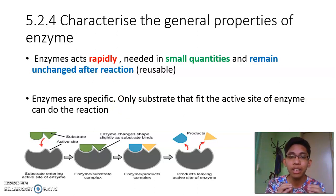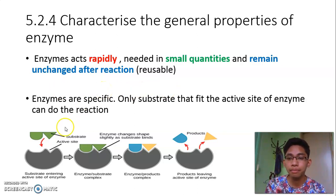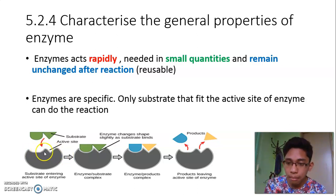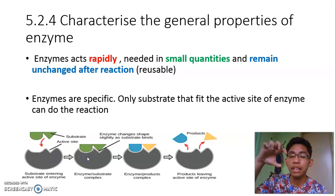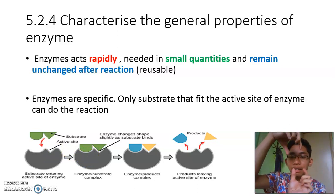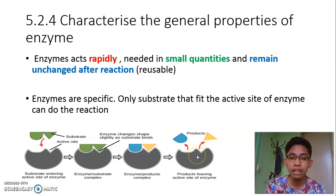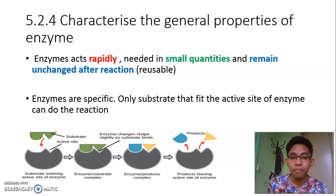Enzyme is also very specific, similar to an antibody. Enzyme only acts on a specific substrate that can fit onto the active site of the enzyme. The gray one is the enzyme and the green one is the substrate — the material the enzyme wants to break down. The active site is the indented region, and the substrate must fit exactly onto the active site. Only then can the reaction occur and the substrate be broken down into products.